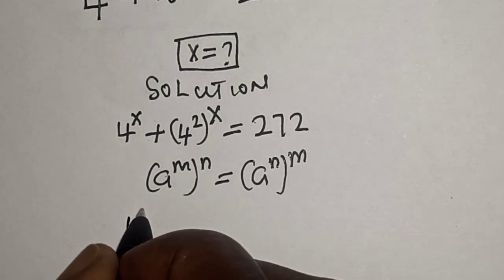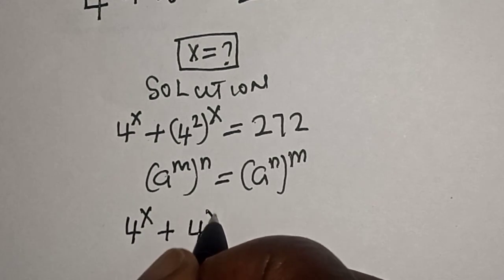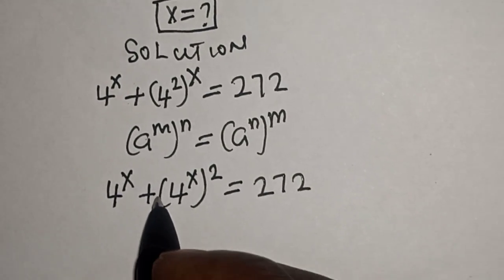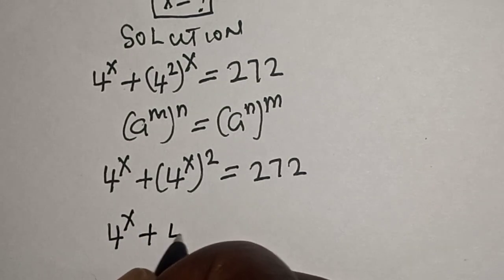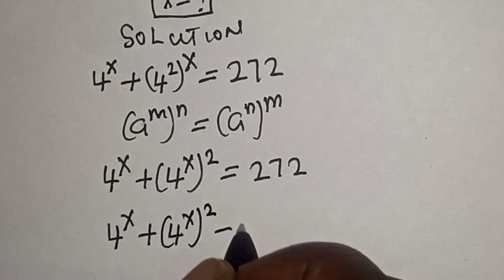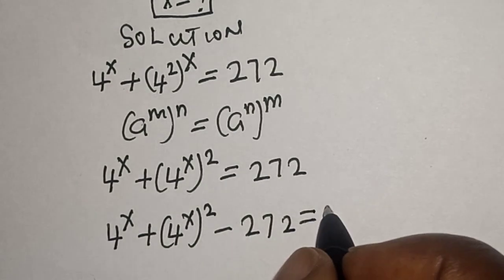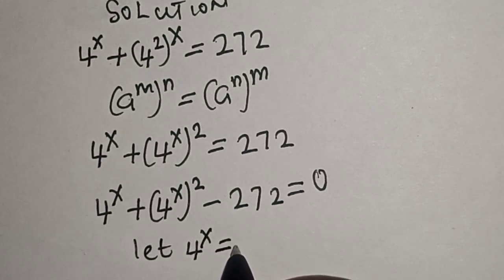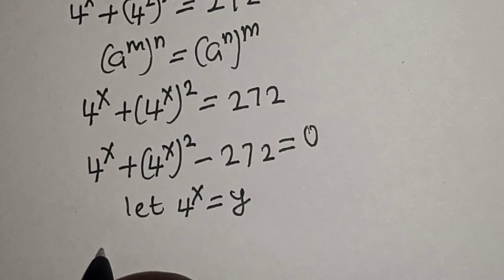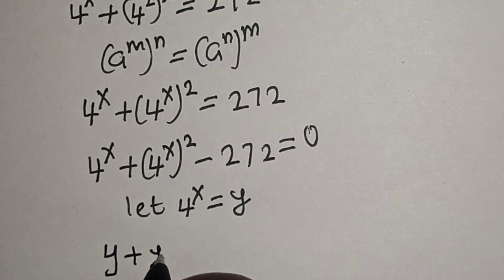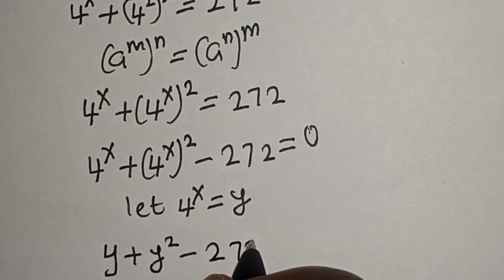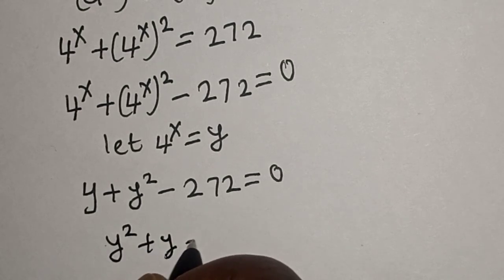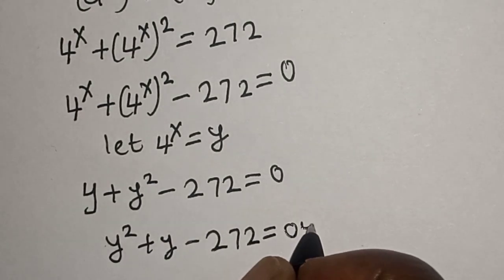This gives us 4 raised to power s plus 4 raised to power s squared is equal to 272. Bringing terms together: 4 raised to power s plus 4 raised to power s squared minus 272 is equal to 0. Let y = 4^s, so we get y squared plus y minus 272 is equal to 0. This is a quadratic equation.